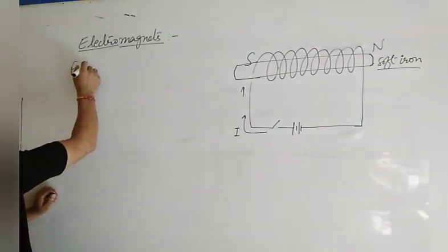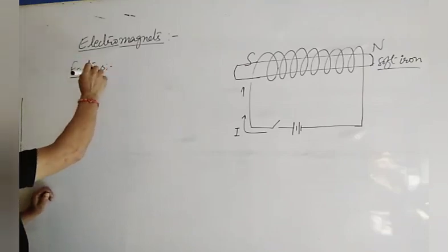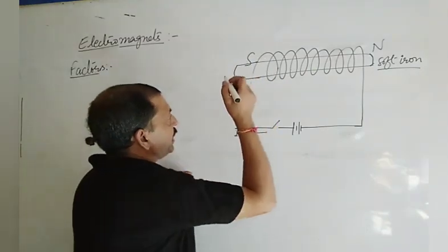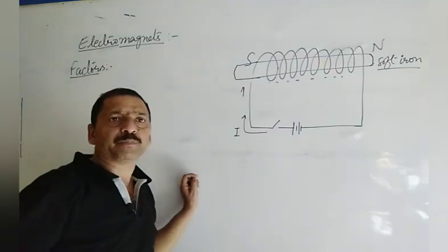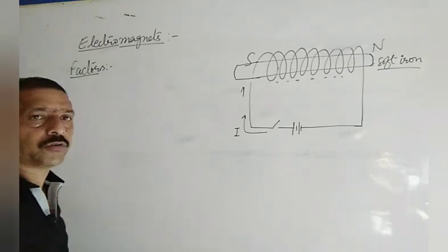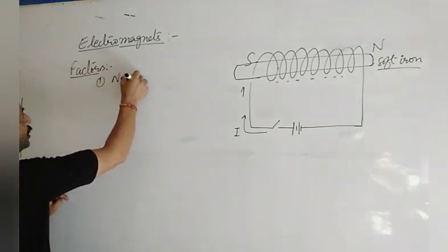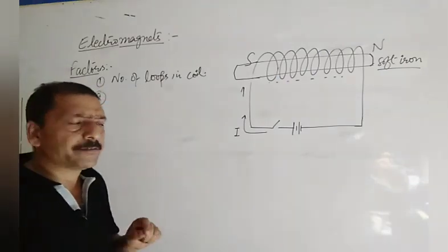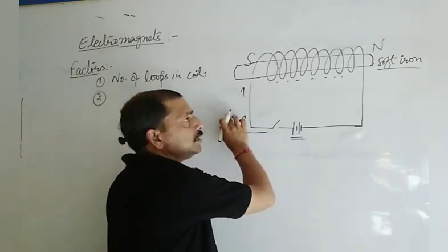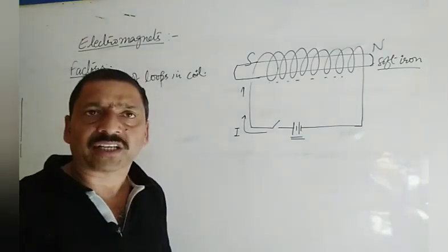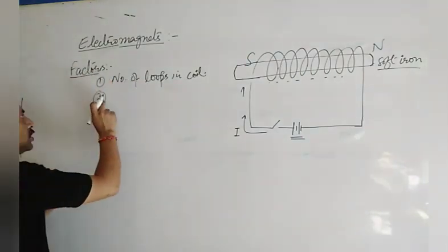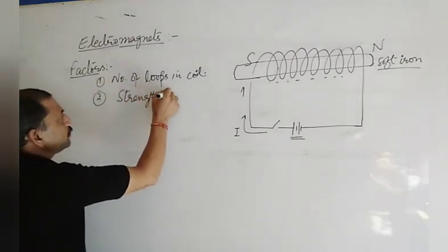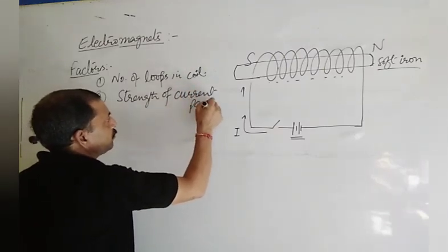What are the factors affecting the strength of an electromagnet? The first factor is that the greater the number of loops, the stronger the magnet. So factor number one is the number of loops in the coil. Factor number two is that the greater the current passed through it, the stronger the magnetic field will be. So the second factor is the strength of the current passed through the coil.